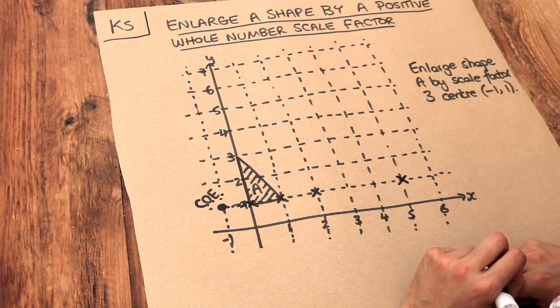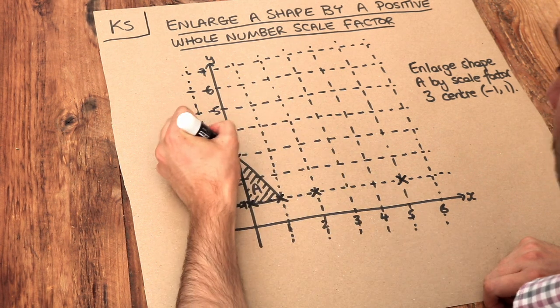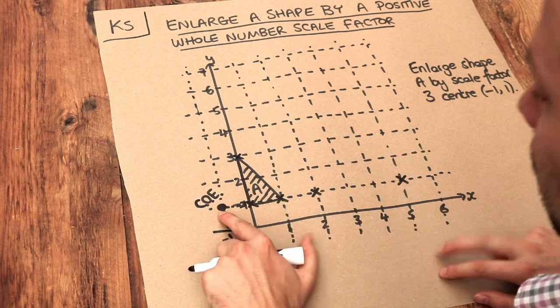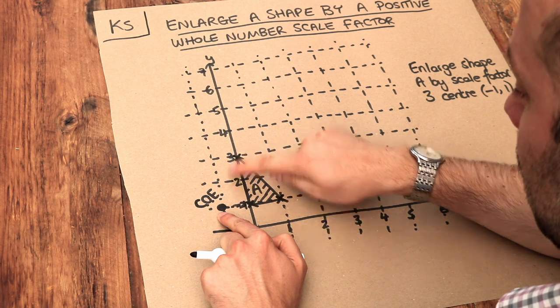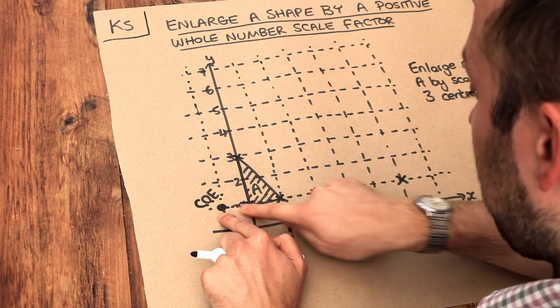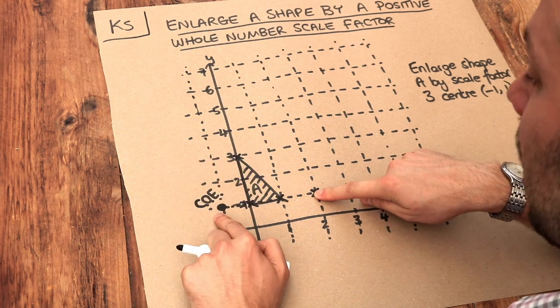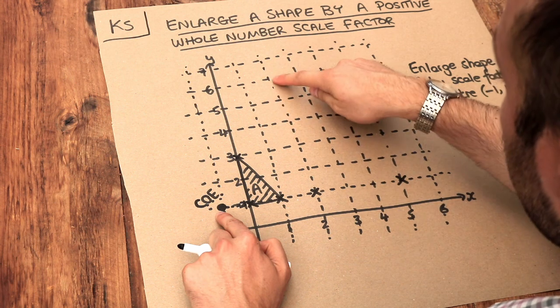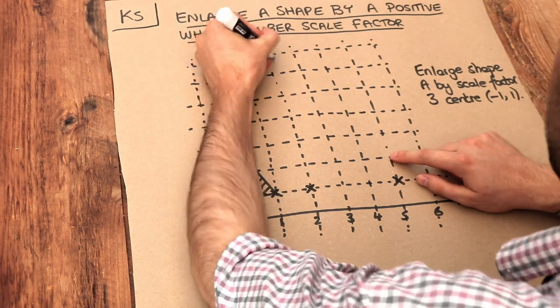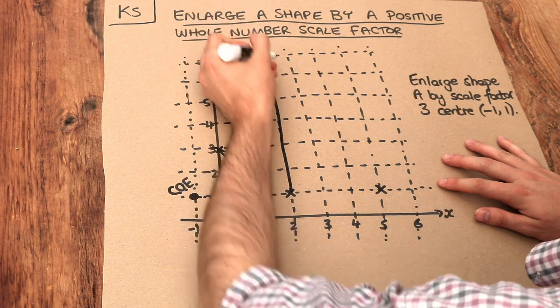So we've got two of our points, now we need one final point to draw our shape. We've got this point here. Starting from the centre of enlargement, we've got one right and we've got two up. So the one right becomes three right and the two up becomes six up. One, two, three, four, five, six, we end up here. And now we can join these up to make our shape.